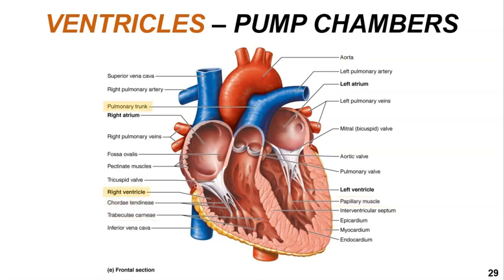When the right ventricle contracts it pushes blood into the pulmonary trunk, the artery that takes blood to the right and left pulmonary arteries, and that blood is sent to the lungs to pick up oxygen. When the left ventricle contracts it pushes blood into the aorta, the main systemic artery, which takes blood to all of the systemic blood vessels with the exception of those serving the lung tissue.